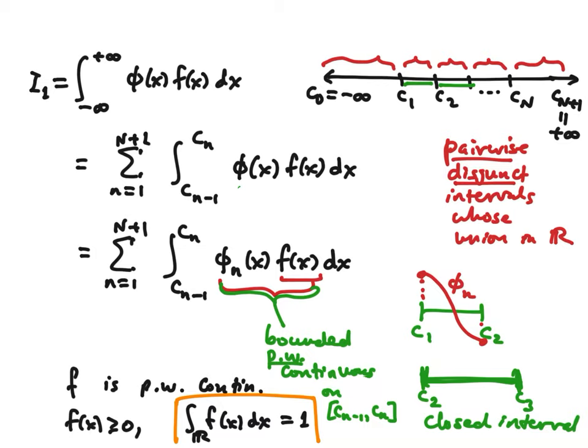A discrete set only has a finite number of elements between any two finite bounds. So c2 and c3 are two finite bounds, and a discrete set of discontinuity points would just be a finite set. So when I say piecewise continuous, I mean there's a finite number of exceptions.